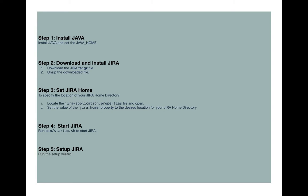After download, it's pretty much just unzipping the tar file into a location on your computer. The third step is setting up Jira home — you need to specify a Jira home directory and provide its location in the jira-application.properties file. The fourth step is to start the Jira application using the startup.sh command. The last step is to set up Jira using the automated setup wizard.